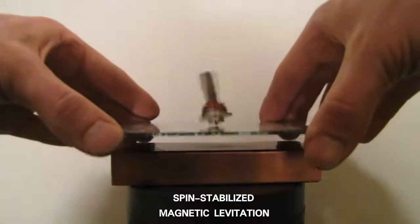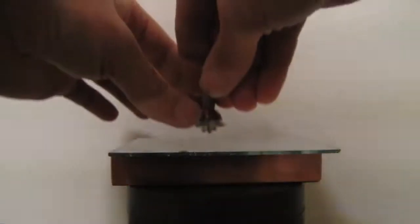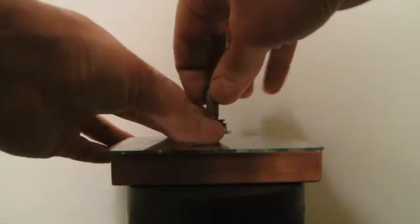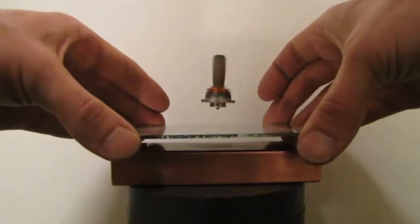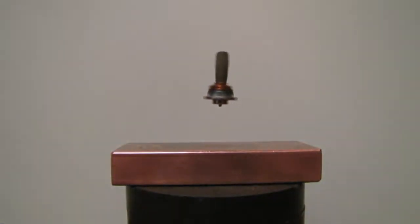A spinning magnet is levitated via magnetic repulsion above another magnet and stabilized by gyroscopic effect. Spinning top acts as a gyroscope and prevents its toroidal magnetic field from fully aligning itself in the same direction as that of the supporting opposing field of the magnetic base.